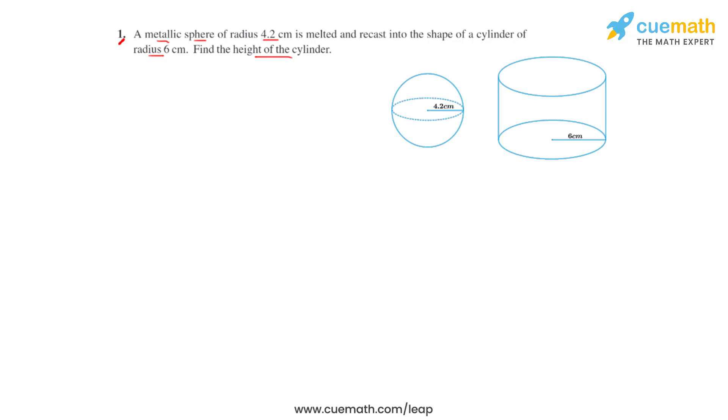So let's visualize this question first. Here we have a sphere of radius 4.2 centimeters, so we can take this as r1, the radius for the sphere, which is melted and recast into the shape of a cylinder. Here we have a cylinder whose radius is 6 centimeters, so let's take the radius of the cylinder as r2.